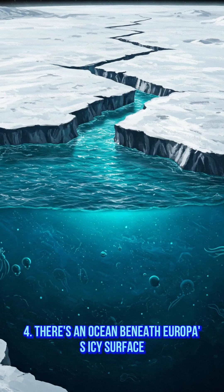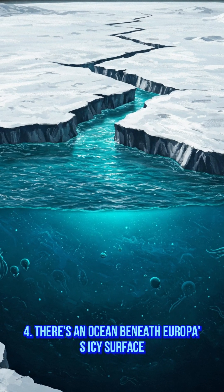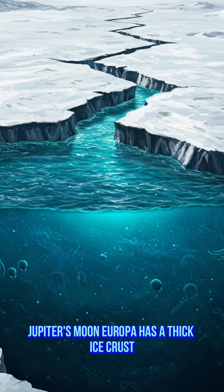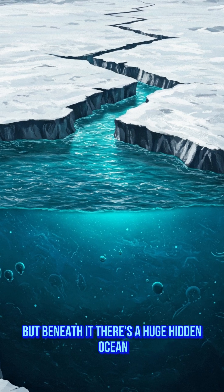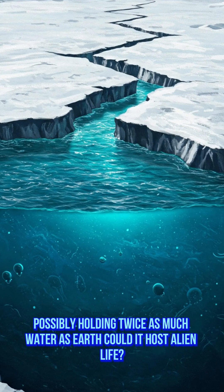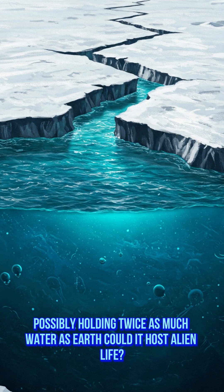There's an ocean beneath Europa's icy surface. Jupiter's moon Europa has a thick ice crust, but beneath it, there's a huge hidden ocean, possibly holding twice as much water as Earth. Could it host alien life?